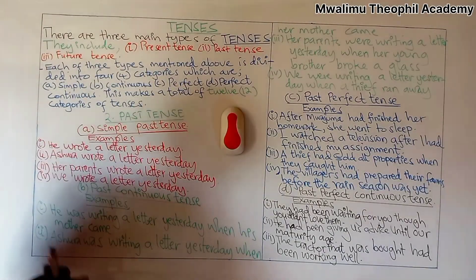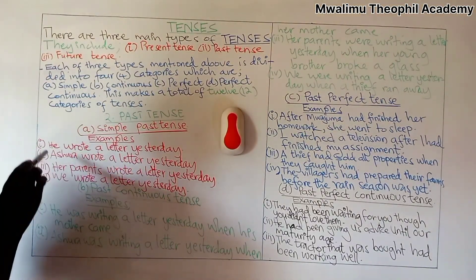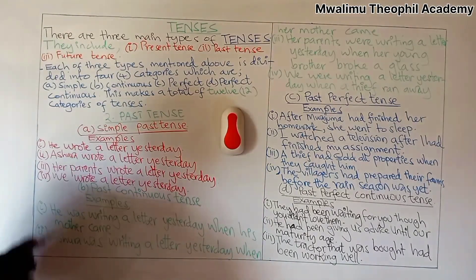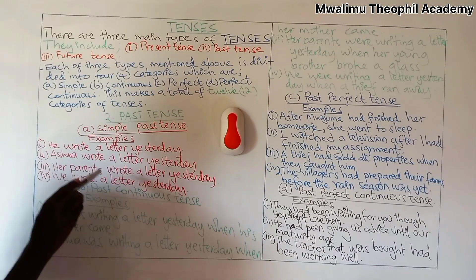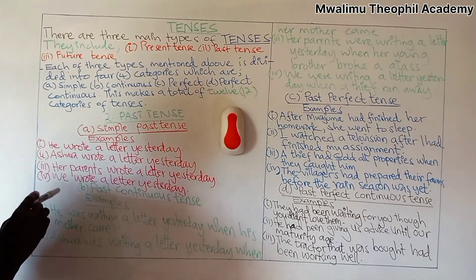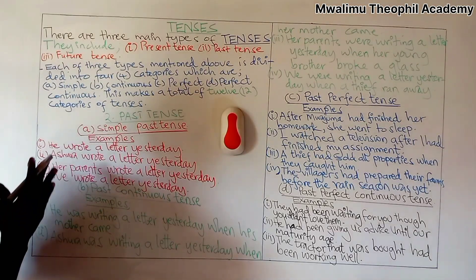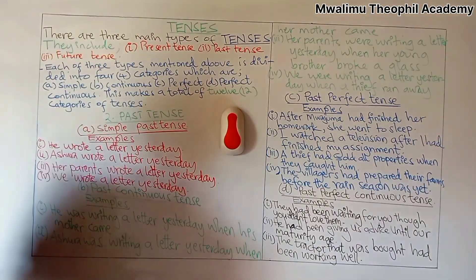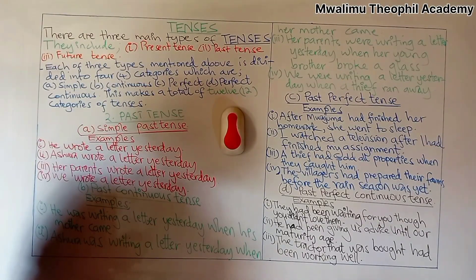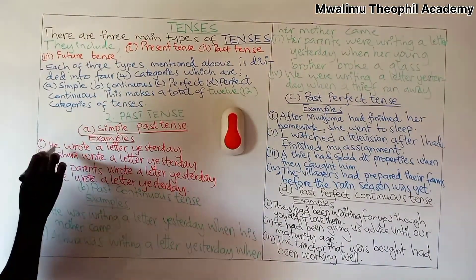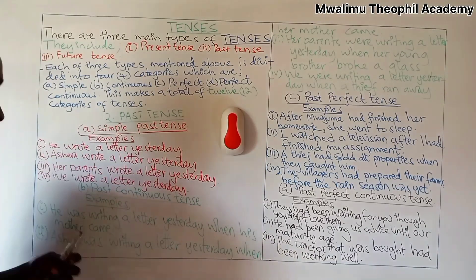We have different examples of sentences in simple past tense. The first example is: he wrote a letter yesterday. A second one: Ashura wrote a letter yesterday. A third example: her parents wrote a letter yesterday. A fourth one: we wrote a letter yesterday. In these four sentences, after the pronoun or noun, the verb which follows is in simple past. The simple past of the verb 'to write' is 'wrote,' as you can see.